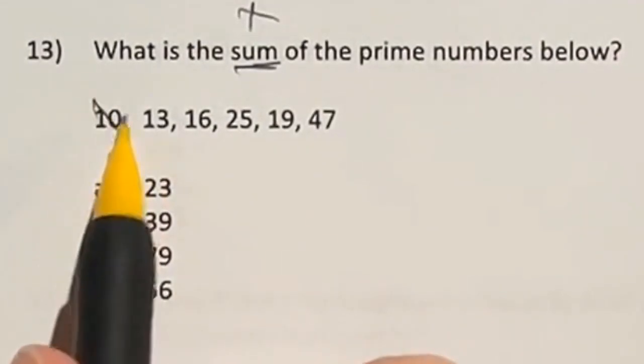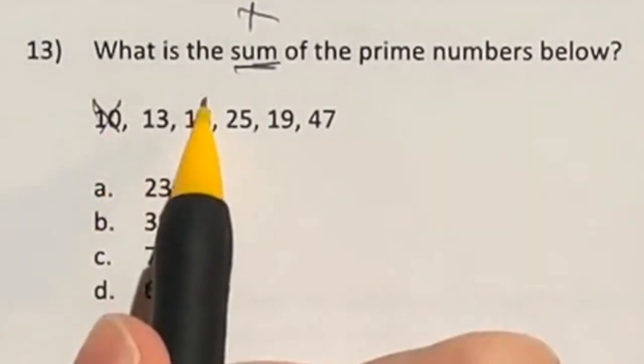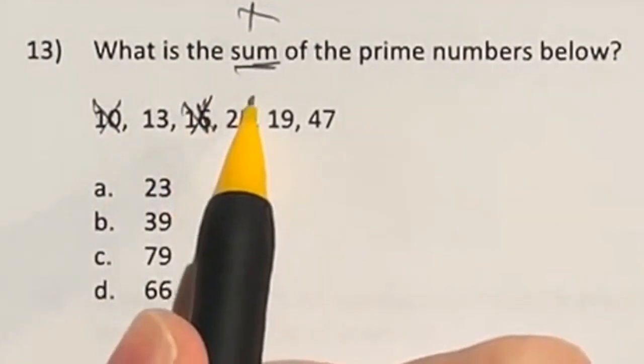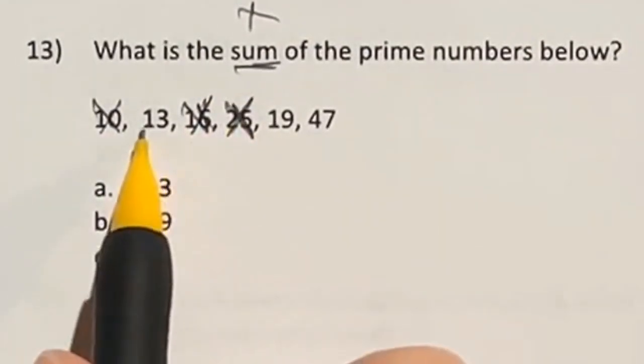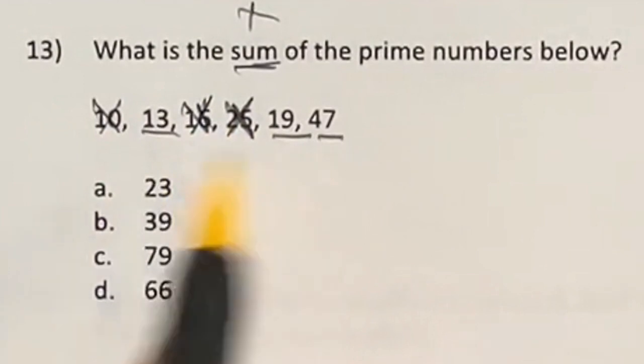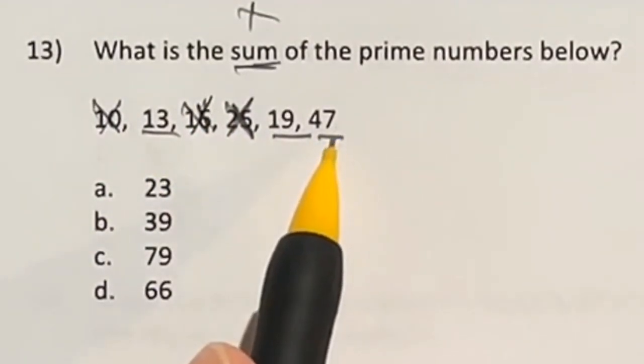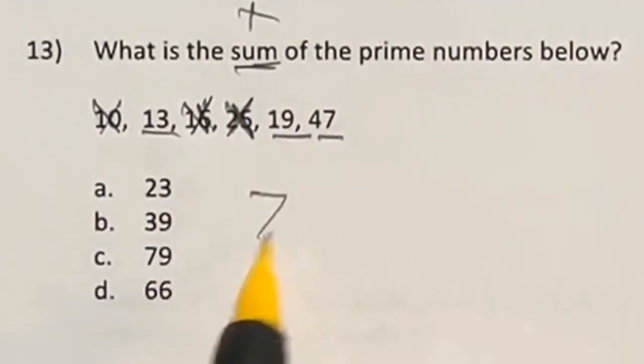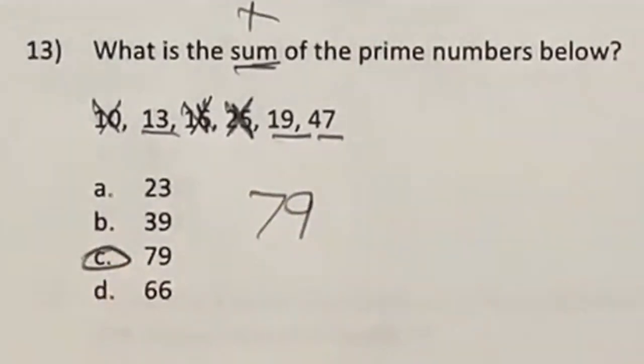In this case, 10 is divided by 5 and 2, so that's out. 16 is divisible by 4. 25 is divisible by 5. So we're left with these three guys here, 13, 19, and 47. When you add those together, you end up getting 79, which is answer C.